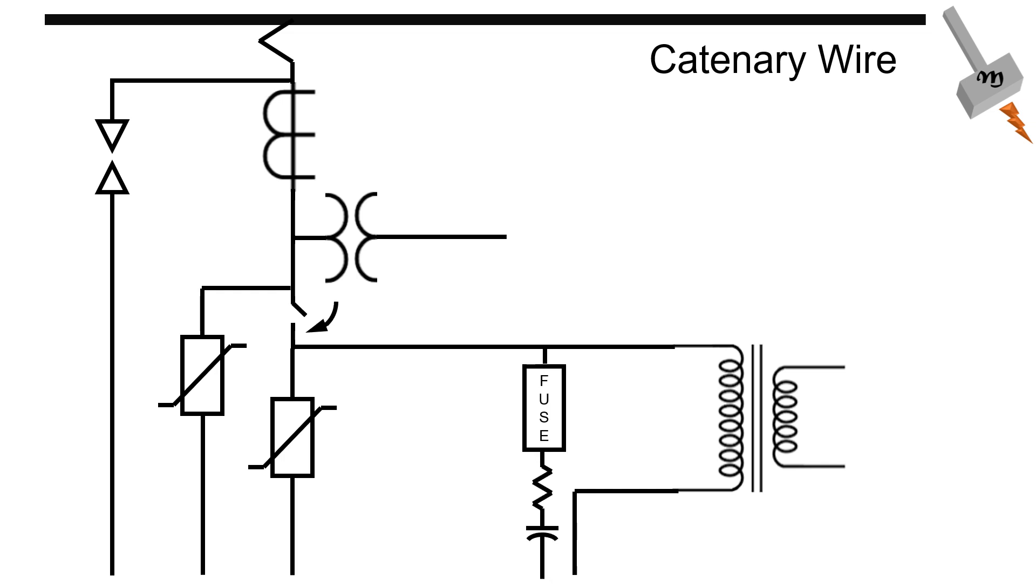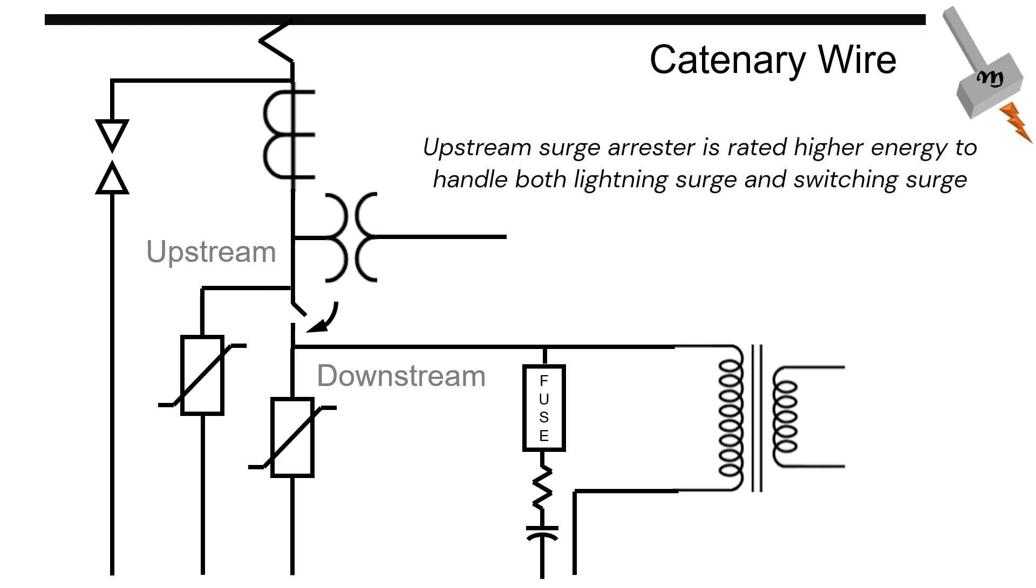Another method can be to put the surge arrester not just at the upstream but at the downstream to provide protection against those fast transients. While the upstream surge arrester is selected for handling higher switching surge, the downstream surge arrester is selected based on the protection level.